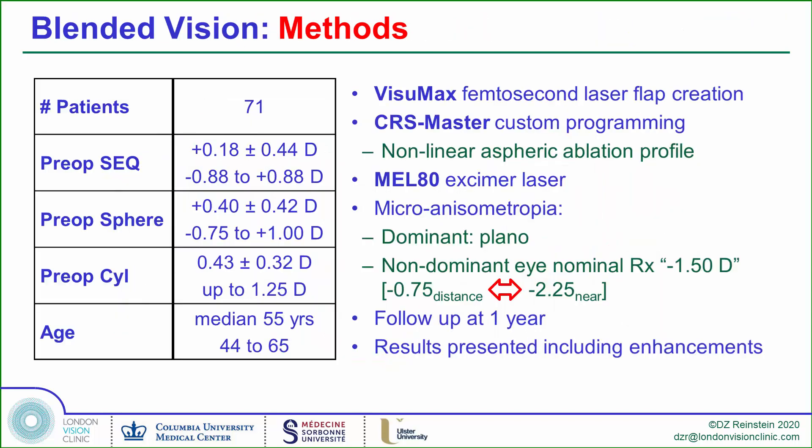These are the results of our published study on plano-presbyopic patients using the CRS Master Platform for programming Presbyond profiles that induce a 1.5-diopter depth of field in each eye. The dominant eye is set to plano, providing distance vision as if plano and intermediate vision as if minus 0.75, while the non-dominant eye is set to a nominal refraction of minus 1.50, giving near vision as if the eye were minus 2.25.